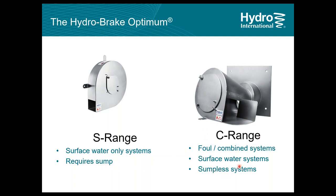The device comes in two main variants. The S-type range is suitable for stormwater, foul water, or combined sewer systems — it is a sumpless device with inlet and outlet at the same invert level. The C-type allows the chamber to drain completely when there is no inflow, which is very desirable when dealing with wastewater as it prevents odor issues due to stagnation. The device is very scalable, able to discharge from one liter per second up to thousands of liters per second per unit.